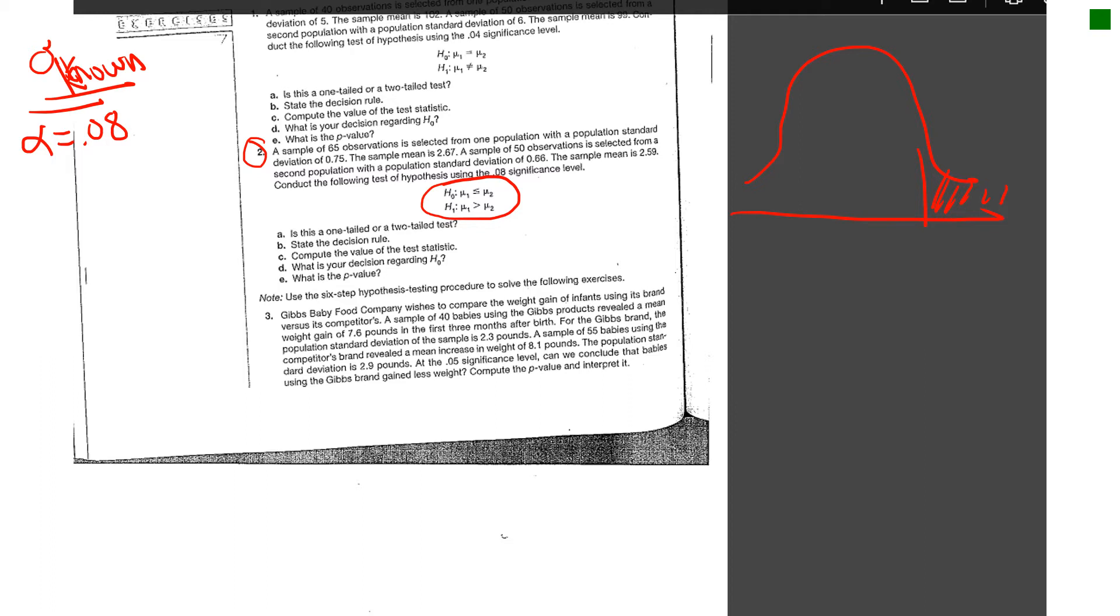Obviously, if this area is alpha which is 0.08, you've got to get a critical z-value. Just remember, you're really looking at 0.42 in your table, and that's going to be right about 1.41. That'll be helpful to help you with your conclusion.